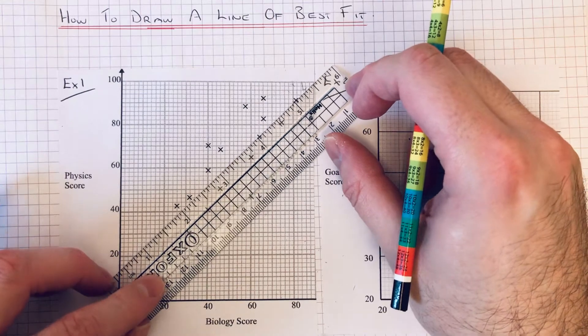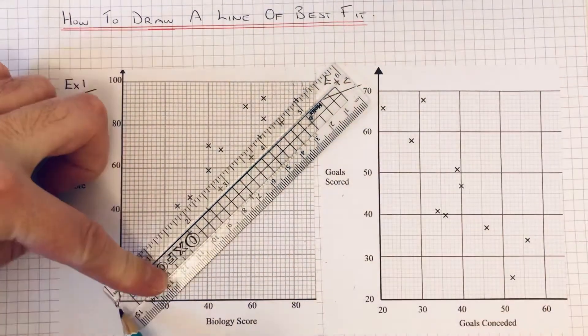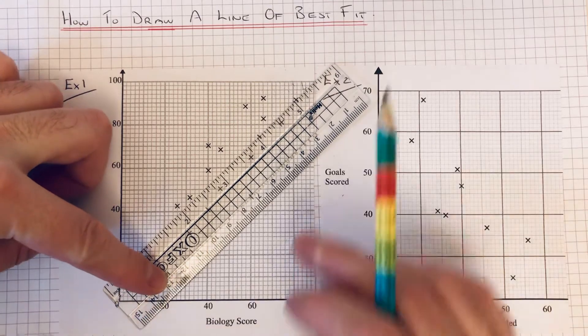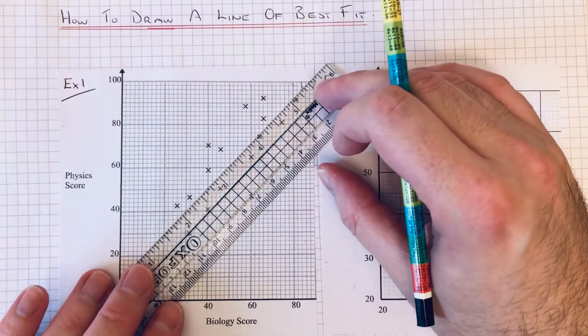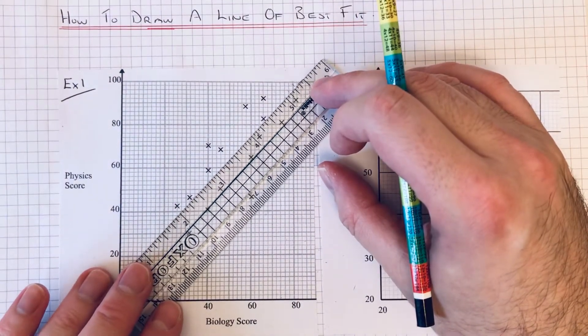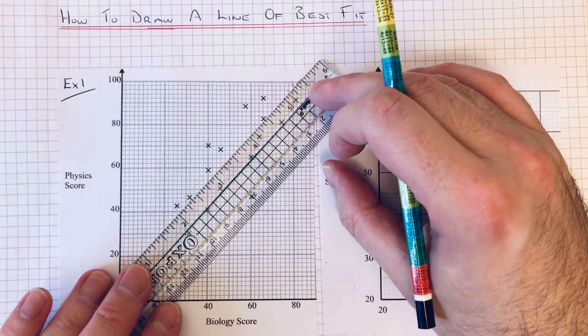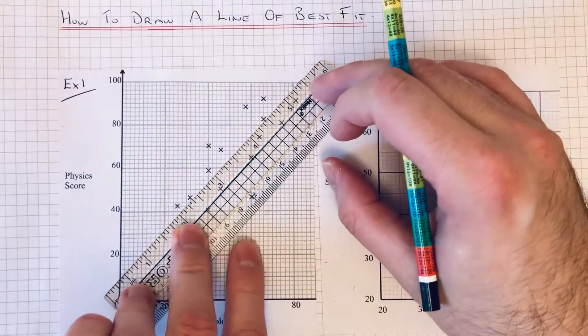It doesn't have to go through the center of the coordinate grid, and it's also best if you've got a clear ruler so you can see your points as well. So I reckon the line of best fit is something like that.